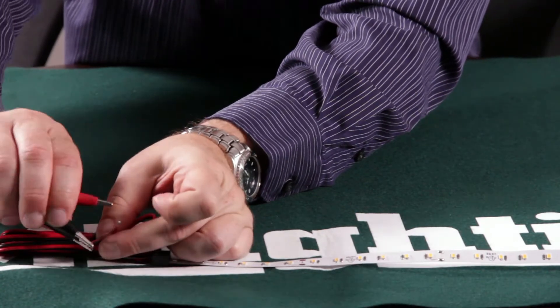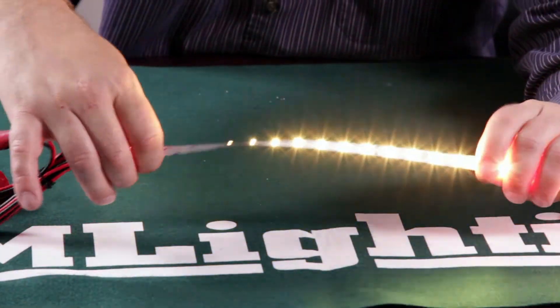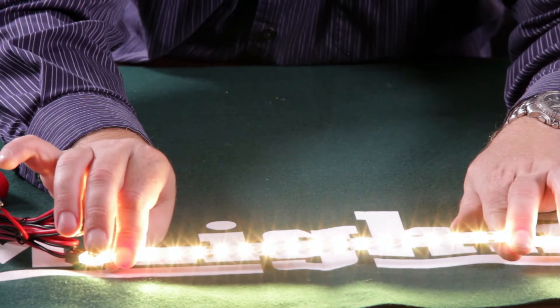If I can get my alligator clips to work, there we go. Voila. 2700K, for example, right here, and that is a high CRI 24-volt ribbon.